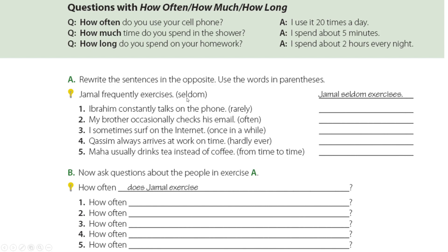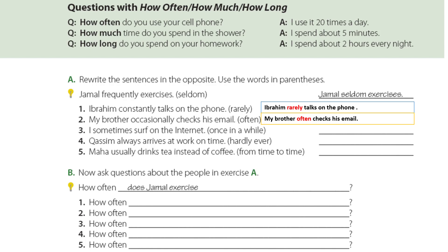Number one: 'Abraham constantly talks on the phone' — the word in parentheses is 'rarely' — so we delete 'constantly' and the answer is: 'Abraham rarely talks on the phone.' Number two: 'My brother occasionally checks his email' becomes 'My brother often checks his email.' Number three: 'I sometimes surf the internet' — the word in parentheses is 'once in a while,' which comes at the end of the sentence — so: 'I surf the internet once in a while.'